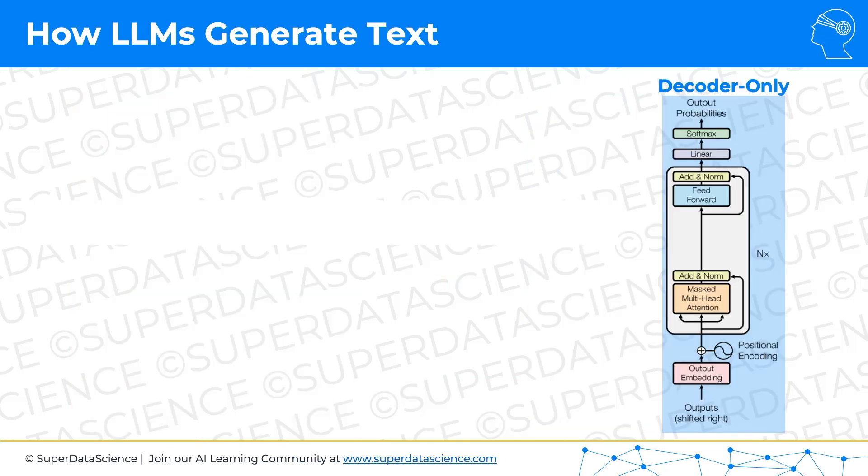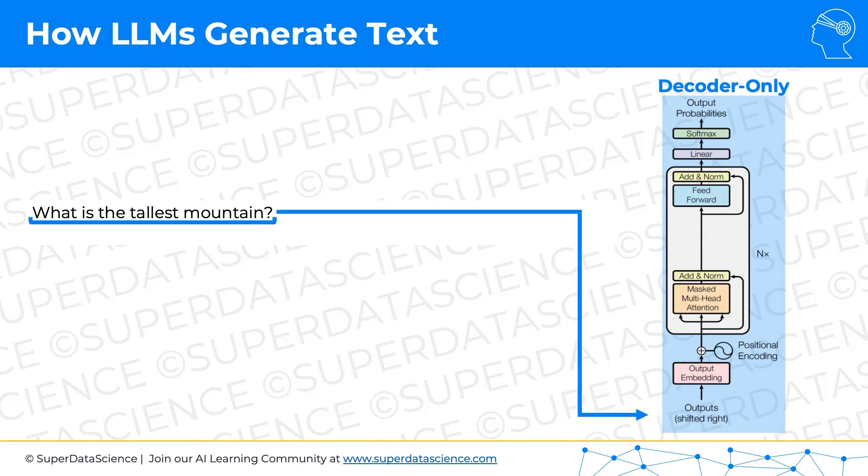So here's our decoder-only architecture. We're going to put in a prompt — it will go at the bottom of our decoder. So we're going to ask: what is the tallest mountain? It goes to the bottom of the decoder. And the decoder, which we will discuss in great detail in the upcoming tutorials, is going to process our prompt. It's going to create vectors, context-aware representations, and apply different neural network weights, and so on.